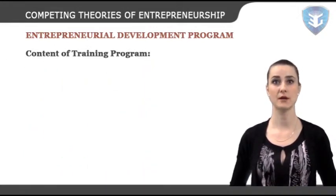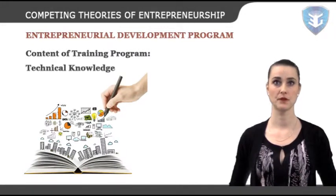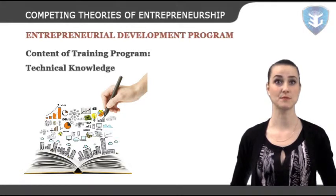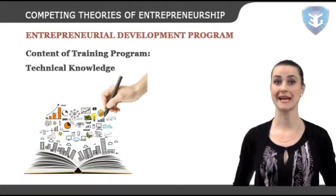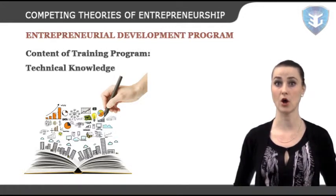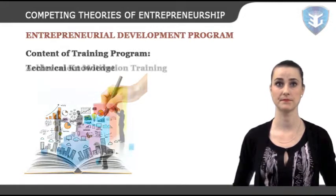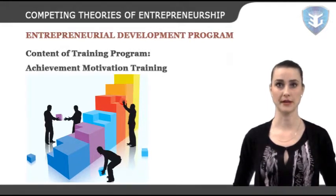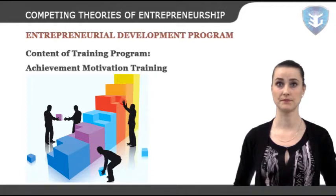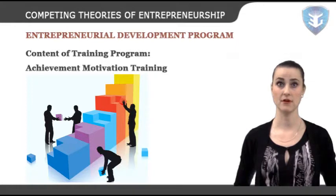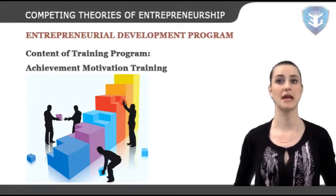Content of training program. Technical knowledge — once the entrepreneur selects a particular enterprise, the technical aspects of the trade are essential; he needs to also know the economic aspects of the technology including costs and benefits. Achievement motivation training — in order to develop human resources, development of achievement motive is essential. The purpose of AMT is to develop the need to achieve, risk-taking, initiative and other such behavioral traits.